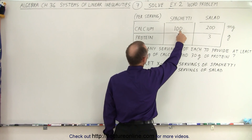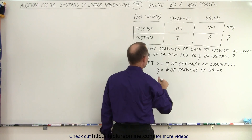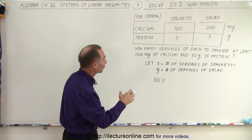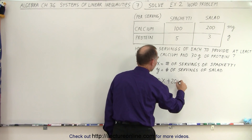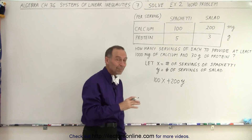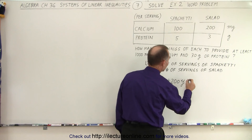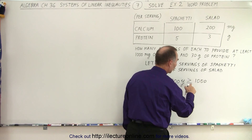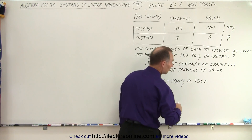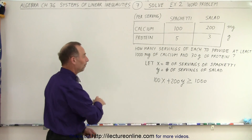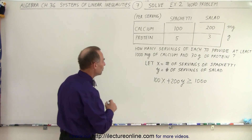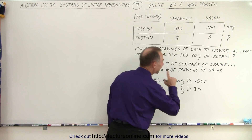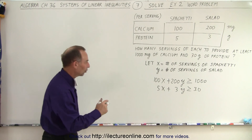If we get 100 milligrams of calcium for each serving of spaghetti, then 100 times x will be the total milligrams of calcium from spaghetti, plus 200y representing all the milligrams of calcium from salad, and that must be greater than or equal to 1000 — because 'at least' means equal to or more. We do the same for protein: 5x plus 3y must be greater than or equal to 30. Those are the two inequalities.